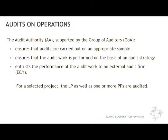It is important to understand the roles of the audit authority and group of auditors. The audit authority is the body verifying the effective functioning of the management and control system in the program. This is done by performing audits on the MAJS as well as on the national control systems. The audit authority is supported by GOA members from each member state and, together with the group of auditors, ensures audits are carried out on an appropriate sample, based on an audit strategy, and trusts the performance of the audit work to an external audit firm — in this case Ernst & Young.